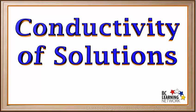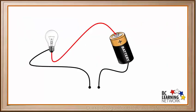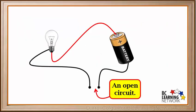A property that some solutions have is something called electrical conductivity. Here we have a battery, light bulb, and some wires. Because these wires are not connected, this is called an open circuit. No electricity can flow because there isn't a continuous pathway for it.